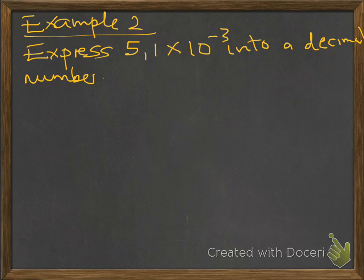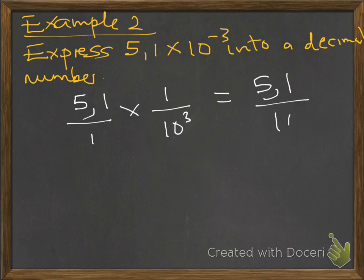Next example, 5.1 times 10 to the power minus 3. We repeat the same process. 5.1 over 1 times 10 to the power minus 3, which therefore means 5.1 over 10 to the power of 3.